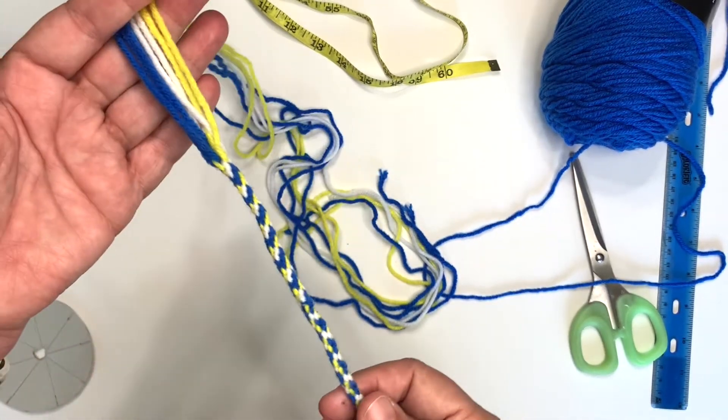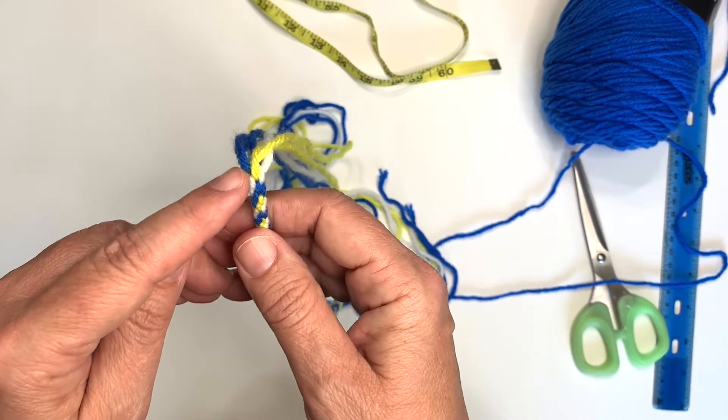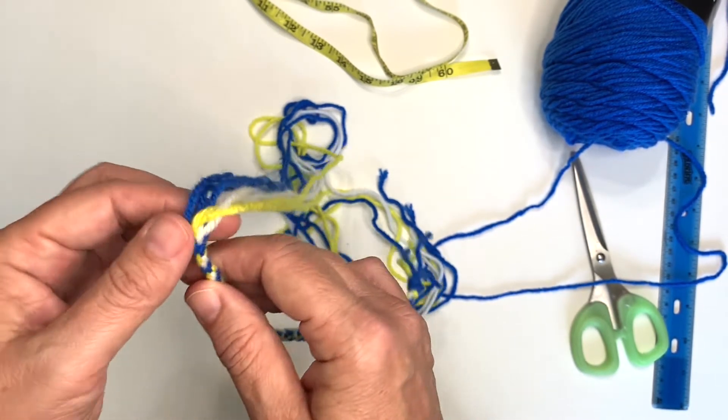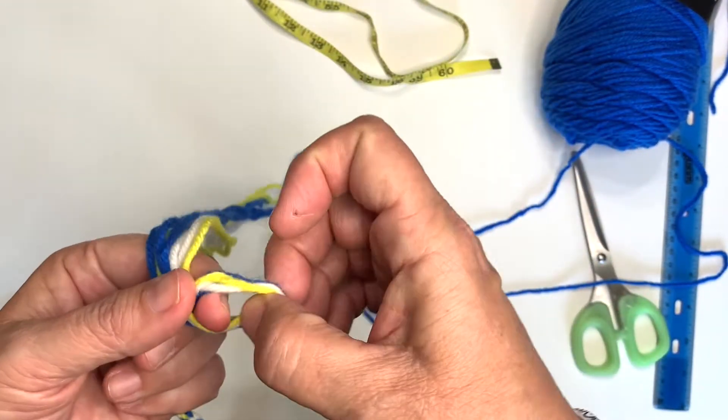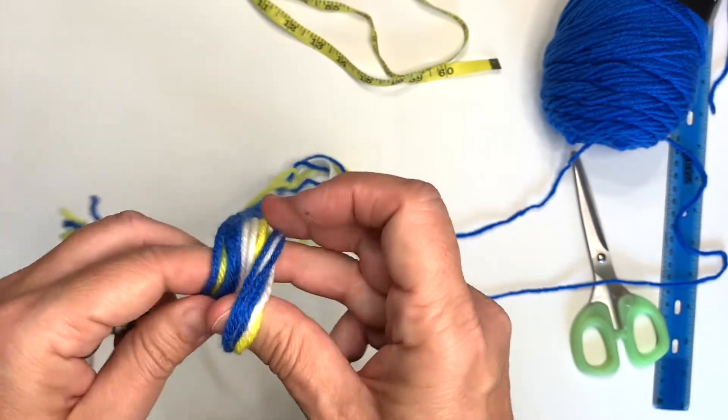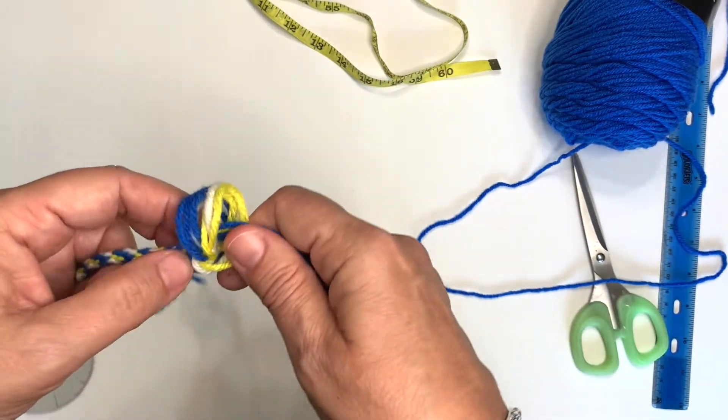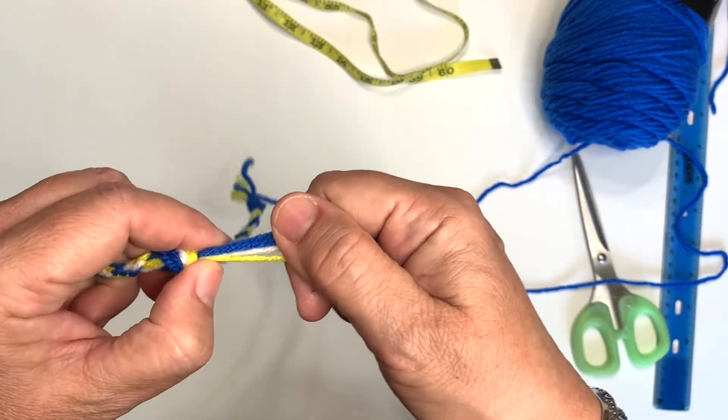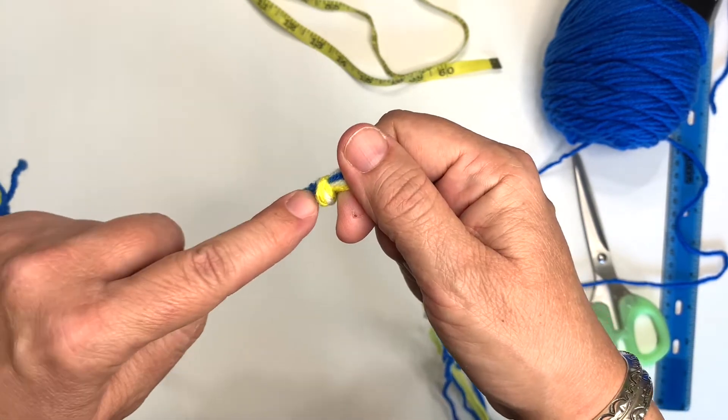Now that it's off the cardboard, I want to stop this from unraveling. So I'm going to put a knot right here. I'm just going to wrap this around my finger and push all of these through the hole. And tie this knot right about the end.